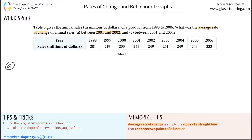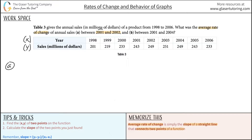Notice that they are giving us two x values. Looking at the variables, I have years and I have sales. Time is the independent variable — years are a representation of time — and the independent variable is x. That means sales will be y. So they gave me two x values.